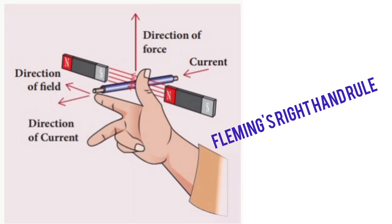Fleming's right hand rule states that if we hold the thumb, forefinger, and middle finger of the right hand mutually perpendicular to each other, then the thumb points towards the direction of motion, the forefinger points towards the direction of magnetic field, and the middle finger gives you the direction of the induced current.